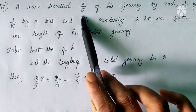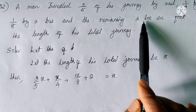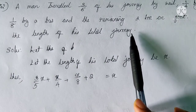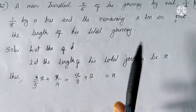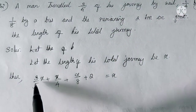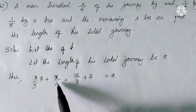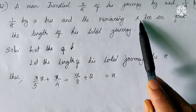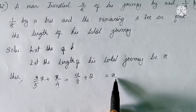A man travelled 3/5 of his journey by rail, 1/4 by a taxi, 1/8 by a bus, and the remaining 2 km on foot. What is the length of his total journey? We don't know the total journey length, so we can take that total length as X. If the total journey is X, he travelled 3X/5 by rail, X/4 by taxi, and X/8 by bus. The remaining 2 km he travelled on foot. When we add all these things, we will get the total journey.